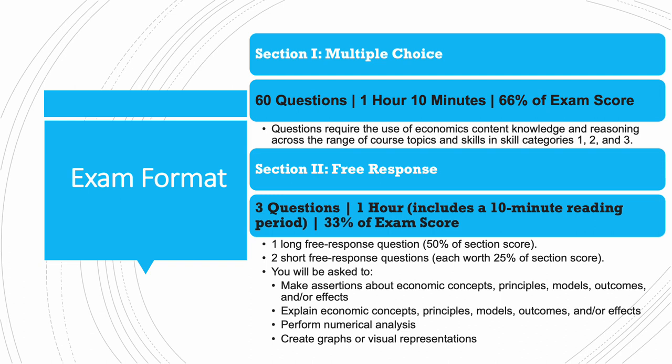The free response section entails three questions. You've got one hour, which includes 10 minutes of reading time, and it's 33% of your exam score — one third. It starts with one long free response question, which almost always includes graphing; it's 50% of that section score. It's followed by two short free response questions, each worth 25% of the section score. You will be asked to make assertions about economic concepts, principles, models, outcomes, or effects; explain economic concepts, principles, models, outcomes, or effects; perform certain calculations; and create graphs or visual representations.